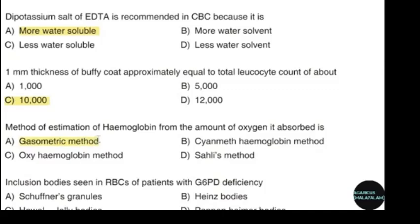Inclusion bodies seen in RBCs of a patient with G6PD deficiency. Correct answer: option B — Heinz bodies.